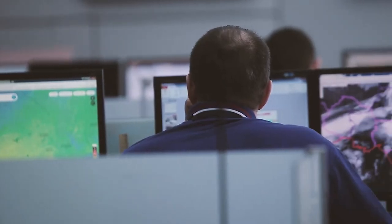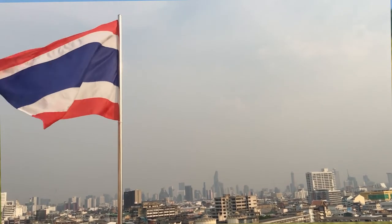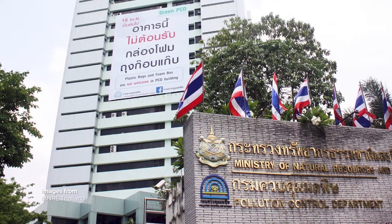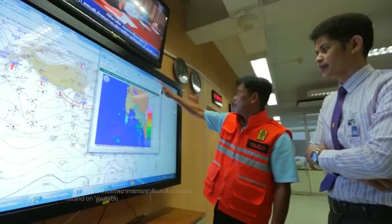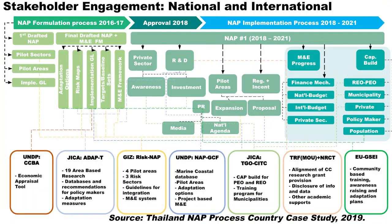In 2018, research and studies were conducted to develop indicators and frameworks for monitoring and evaluation. The same year, Thailand released the second draft of the NAP, which went through a national public hearing and was reviewed by the National Working Group on Integration of Adaptation Implementation, the Subcommittee on Climate Change Policy and Planning Integration, and was reviewed and approved by the National Committee on Climate Change. During the entire NAP development period, the process was supported by different national and international organizations and research institutions including UNDP, EU, GIZ, JICA, TRF, NRCT, and TGO.